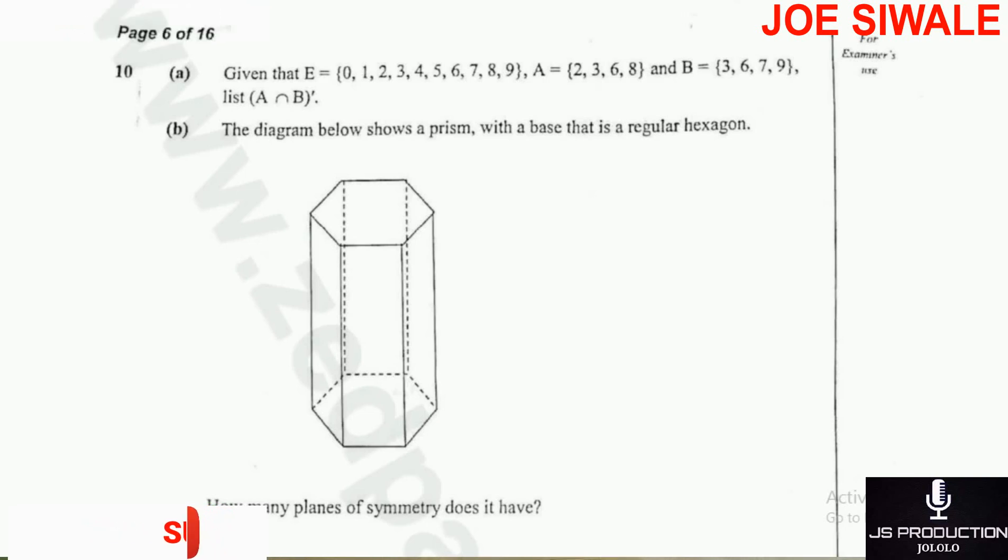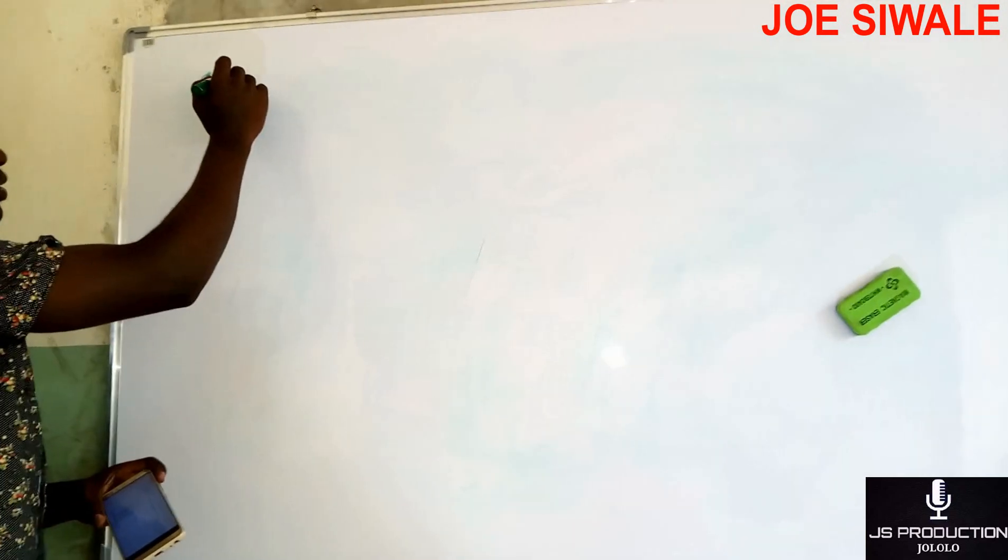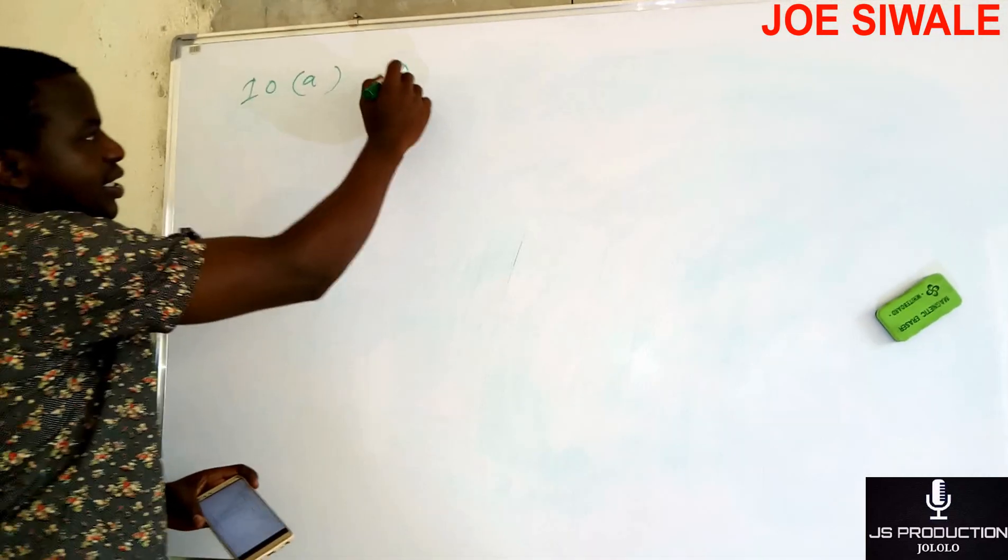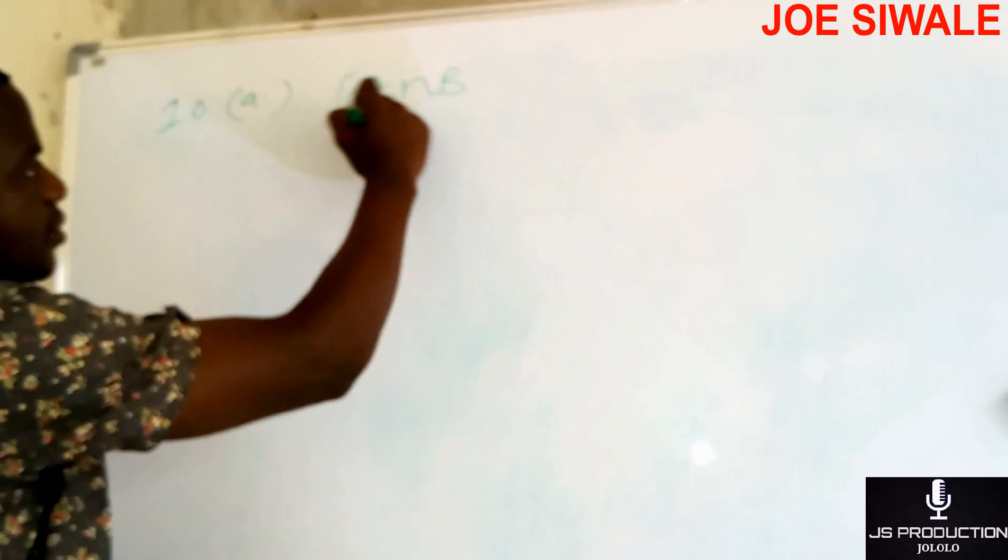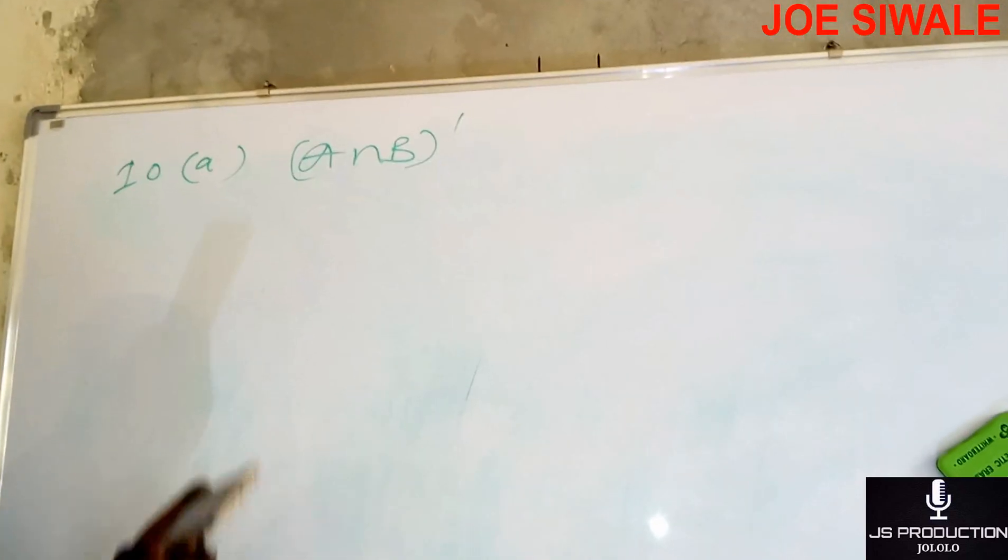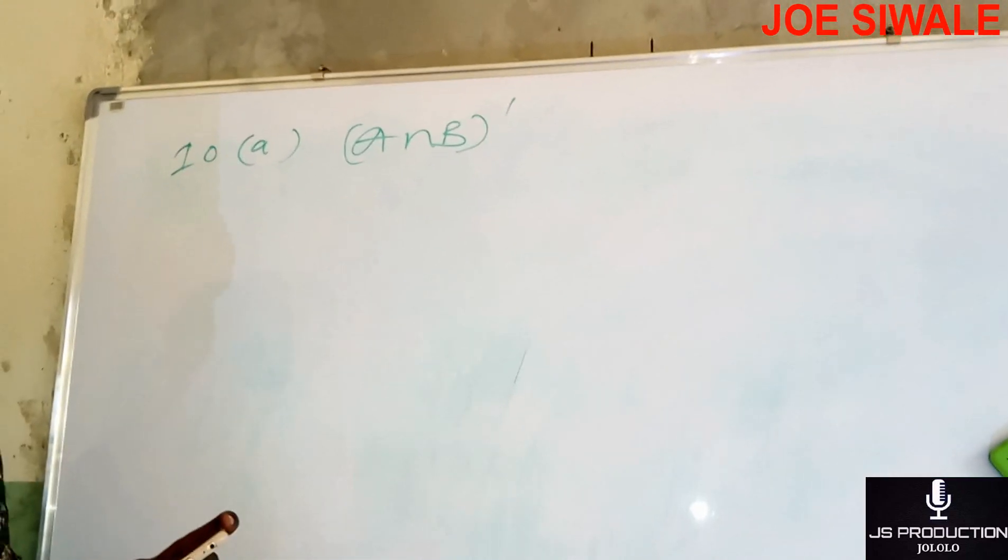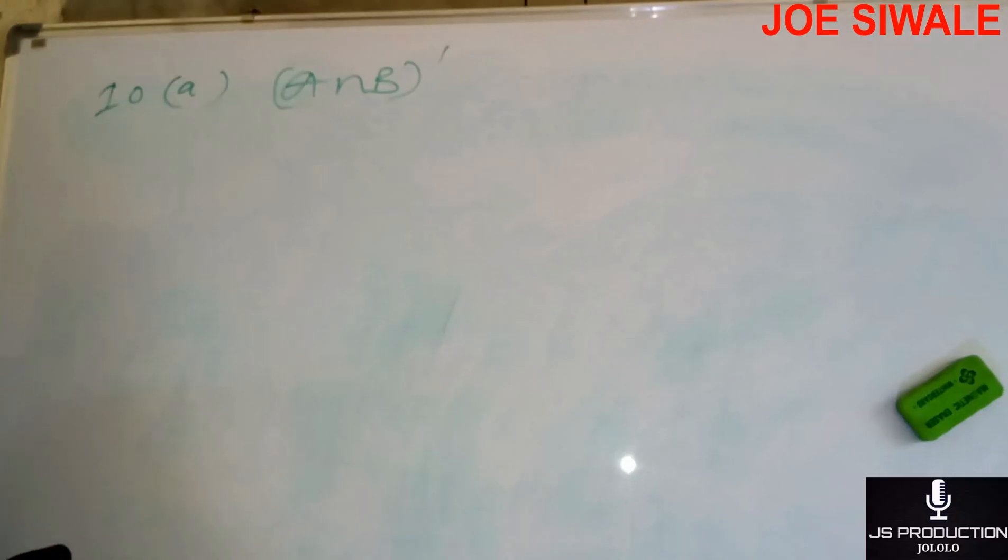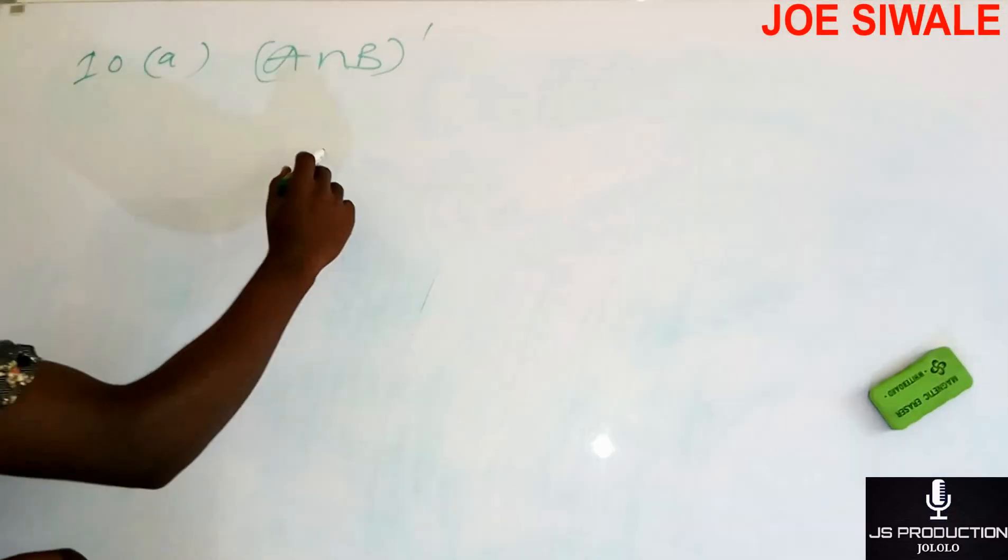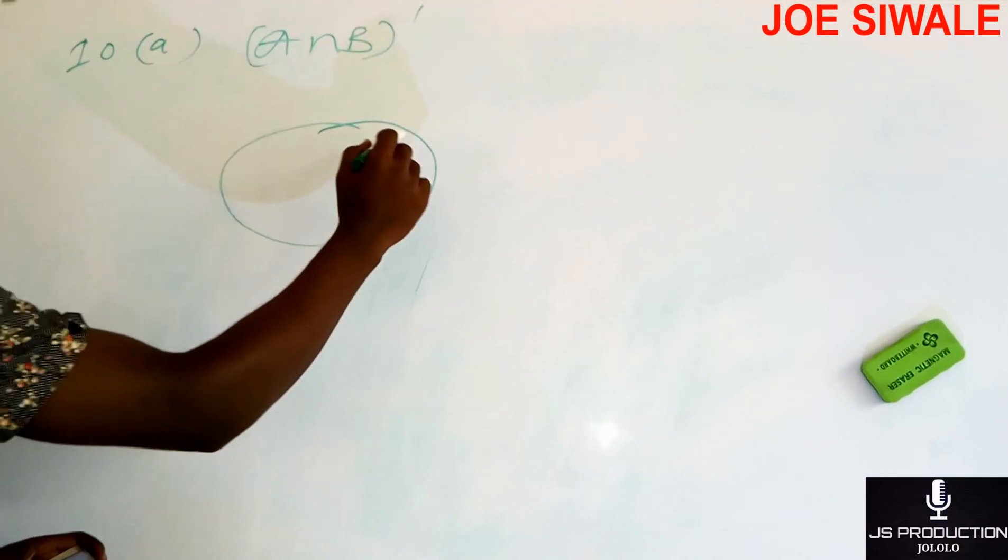So I'm supposed to find A intersection B complement. For me to find A intersection B complement, I'm going to draw my Venn diagram. So I have two sets,